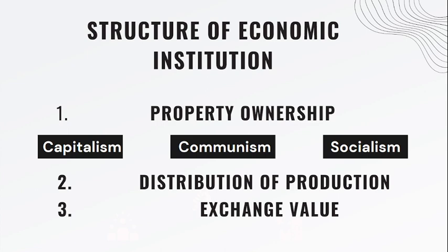The products are distributed among the members of the society by various groups called traders and businessmen — that is another structure of the economic institution. The last one is exchange value: the produced goods and services have their exchange value, which can be measured in cash or in kind. The first known currency was used in 1600 BC, like coins in Turkey, which then evolved into banknotes around 1661 AD.